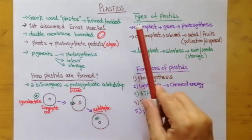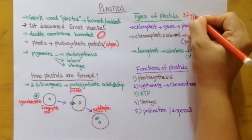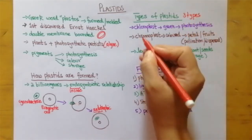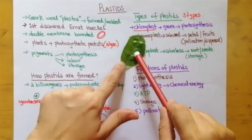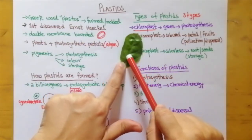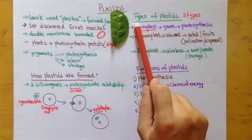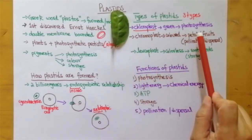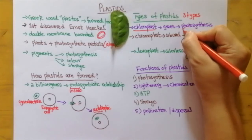There are three main types of plastids. The first is the chloroplast — the green plastid. It is called the green plastid because it gives green color to the plant. This leaf has green color because it contains chloroplasts. The benefit of chloroplasts is that they allow the leaves to photosynthesize, meaning they can prepare their own food.